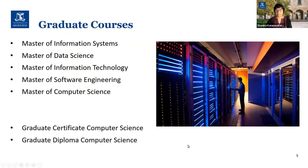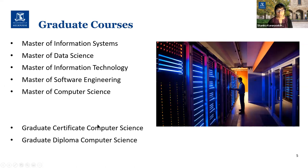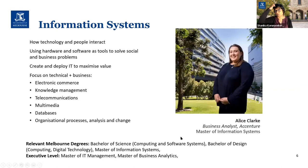After undergraduate studies, either through a major or a diploma in IT, we offer many different master's courses. I've listed them from least technical to most technical. A graduate certificate is 50 points, a graduate diploma is 100 points — eight subjects — but the focus today will be on the master's degrees. On the least technical end is the Master of Information Systems, and on the most technical end is Computer Science.